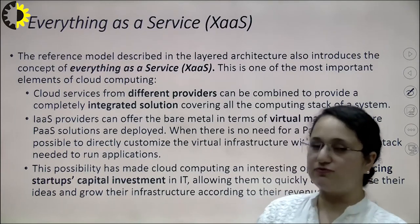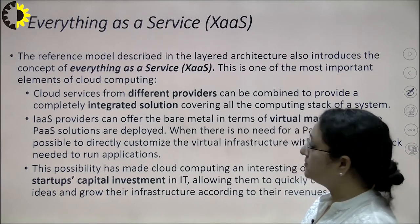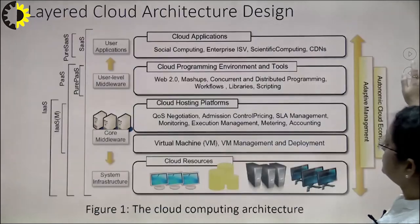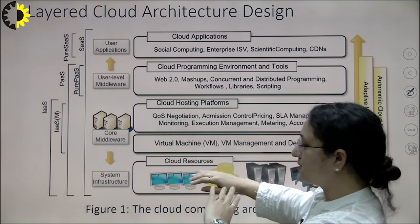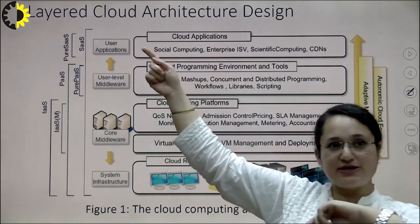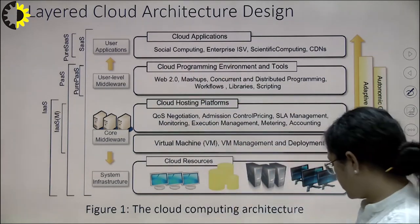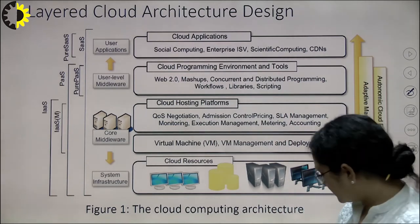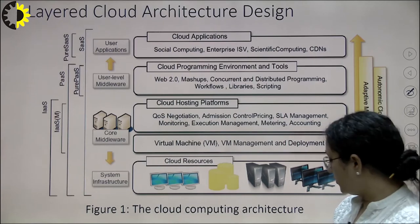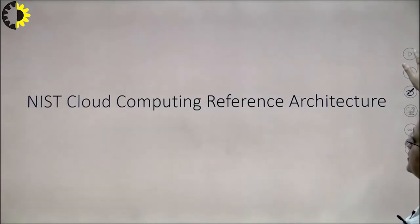In summary, the layered cloud architecture starts from the hardware at the bottom up to software applications, covering Infrastructure as a Service, Platform as a Service, and Software as a Service. Now we move on to the next topic: the NIST cloud computing reference architecture.